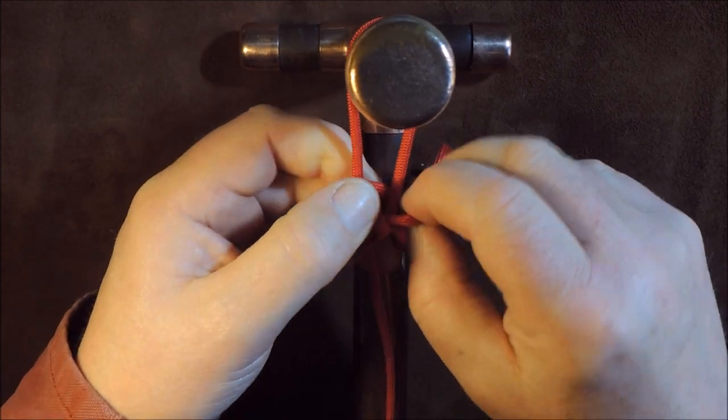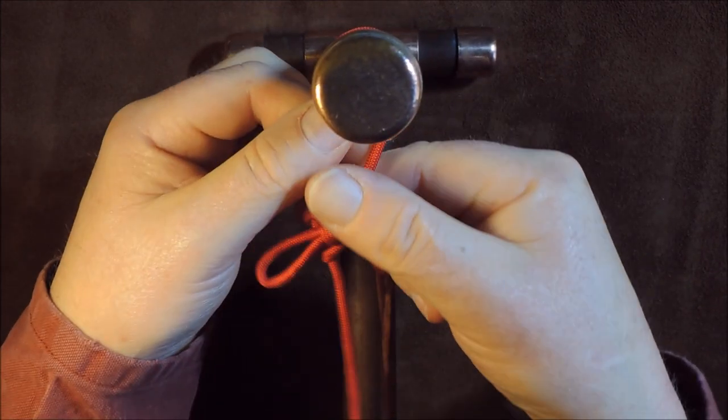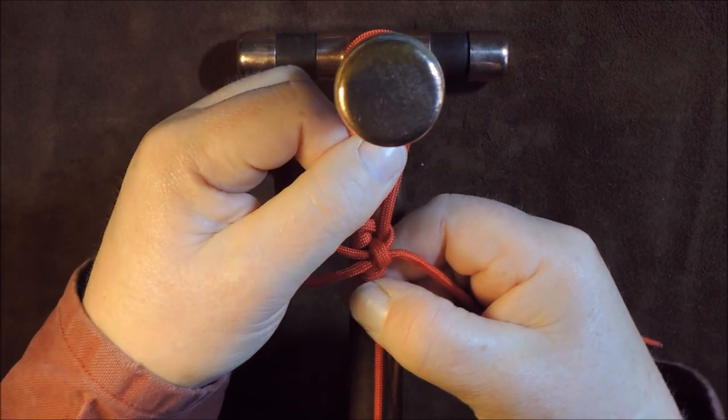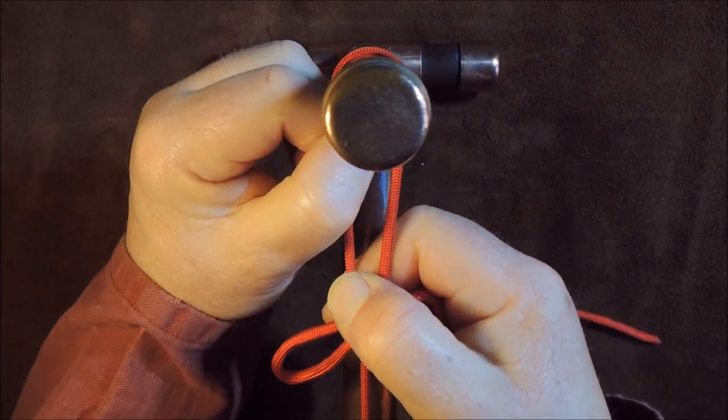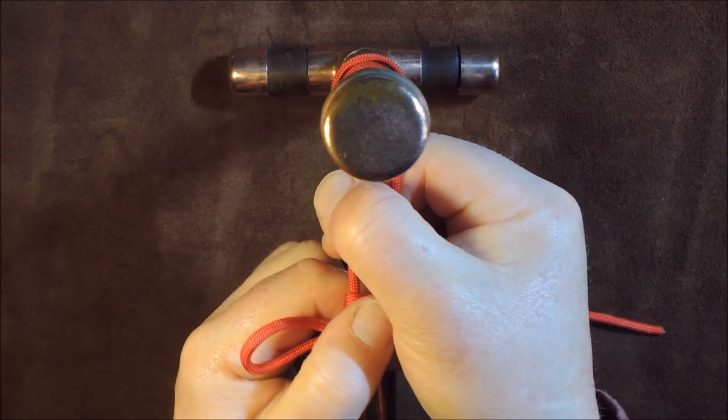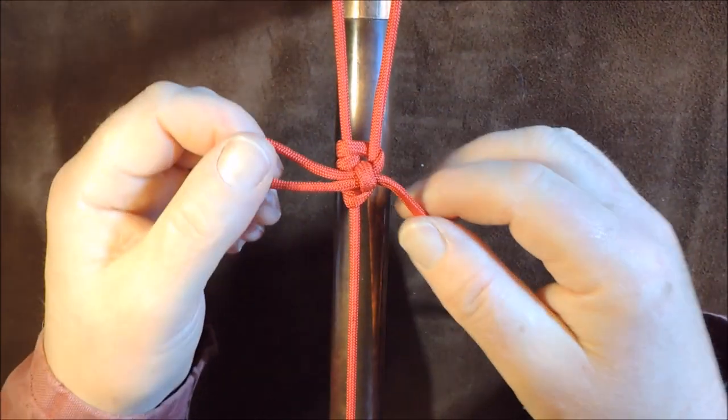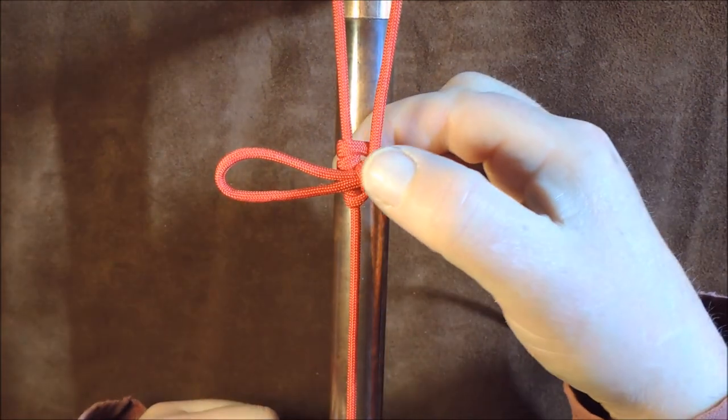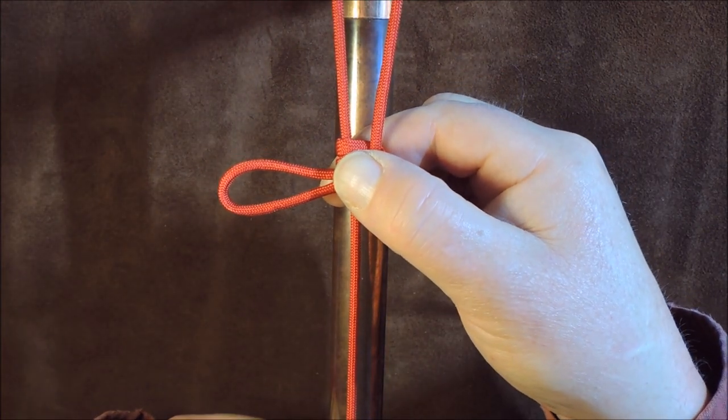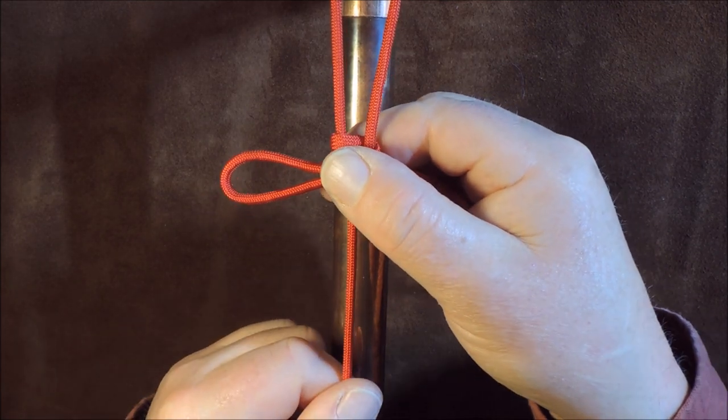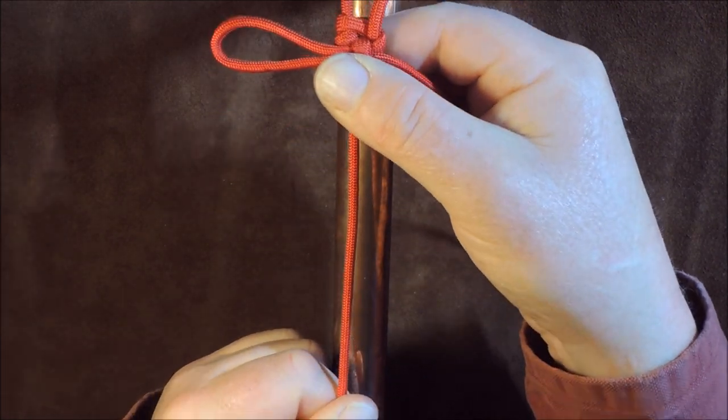All I'm going to do now is just pull on all the cords to make sure it's nice and tight. Pull on all the cords, take your time with it, and now I can pull it up nice and tight. You can see here now that I have got the friction knot in place. When I put my fingers on either side of the knot, that's tight at the moment.